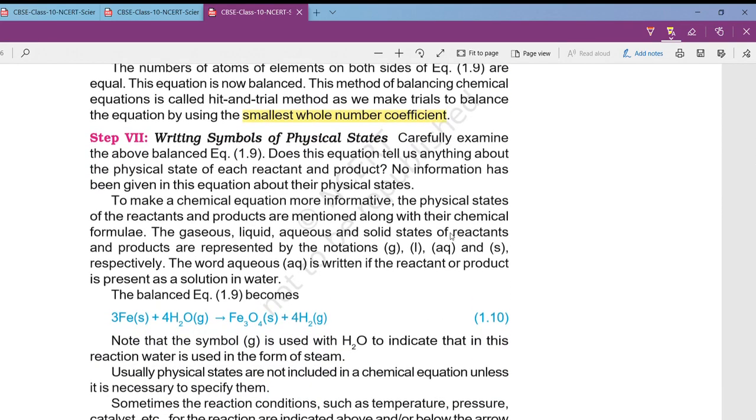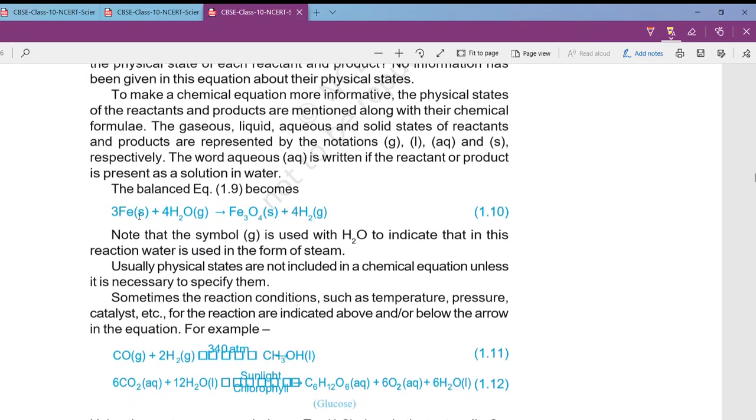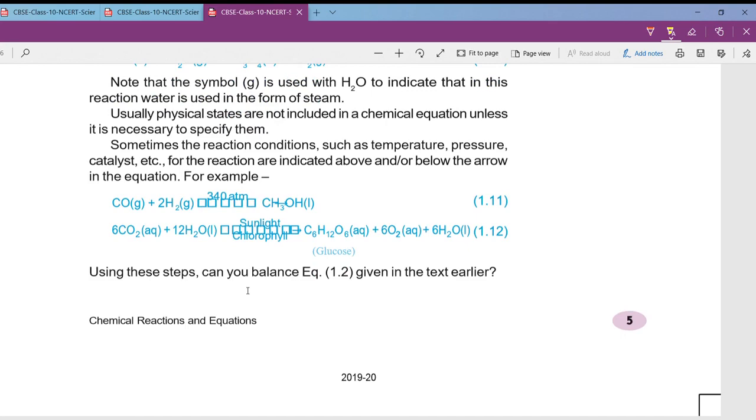Now the final step is writing the state, that is whether solid, liquid, or aqueous state on both reactants and product side. This is not that important. It is only important when it is given in the question to mention the physical states. We know that ferrous is always solid in normal temperatures. So solid plus water is liquid, or we will also get it in the gaseous form because in this particular reaction we are just sending water in the form of steam. So they have written it as gaseous, and then Fe3O4 is a solid. It is a kind of crystalline powder and hydrogen is again gas.